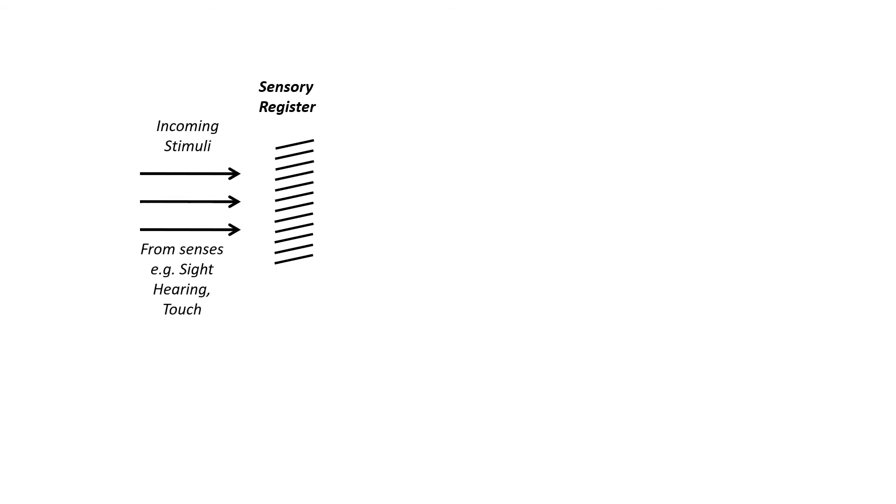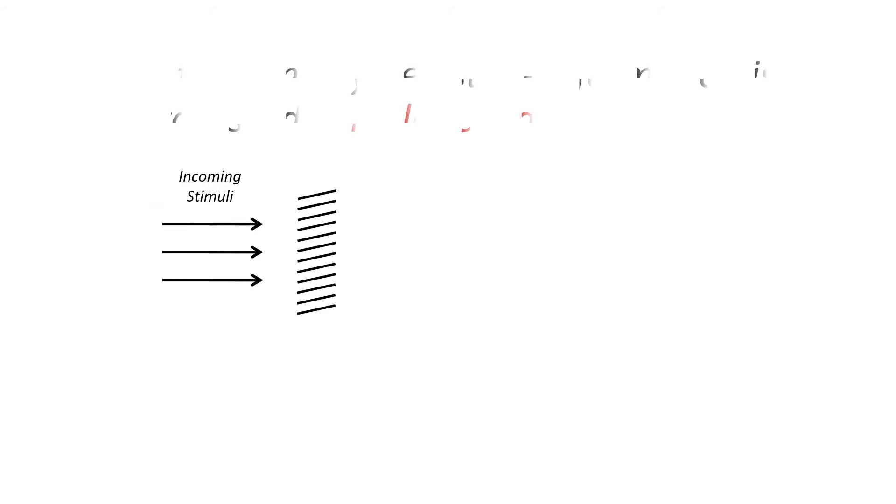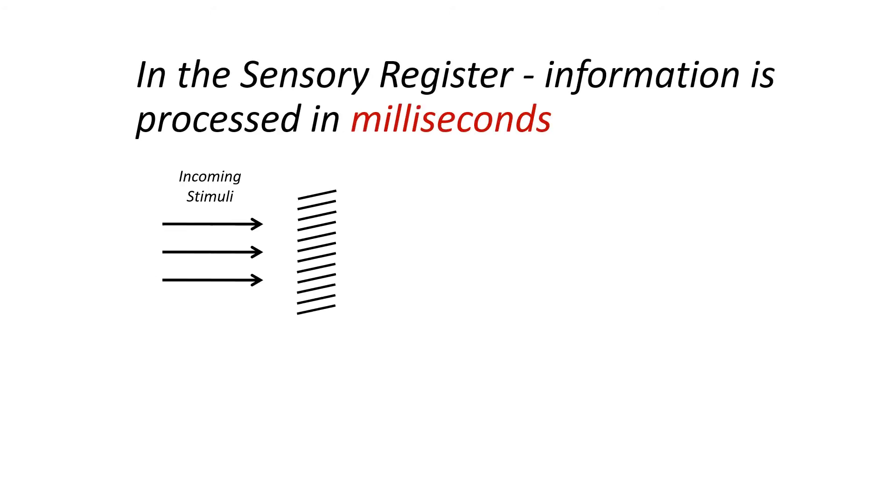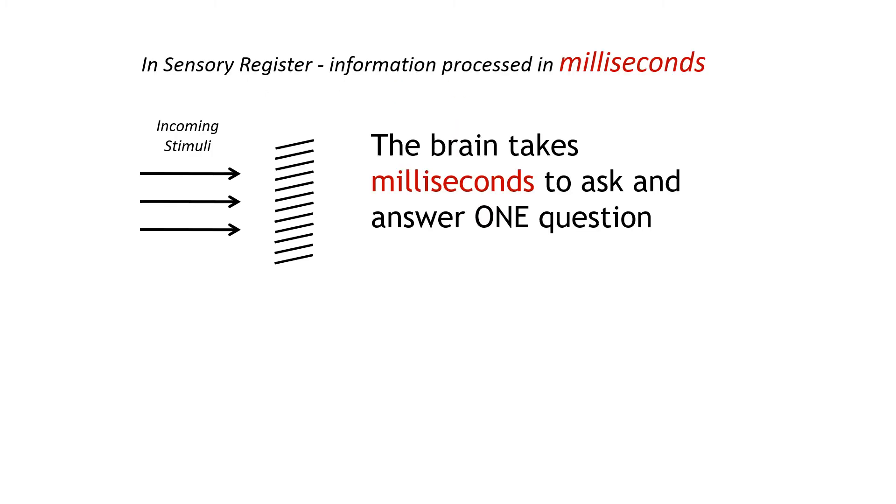Incoming stimuli are detected or perceived in the sensory register. This perception process happens in milliseconds, which is faster than the blink of an eye. In milliseconds, the learner's brain answers one question. What is this question?